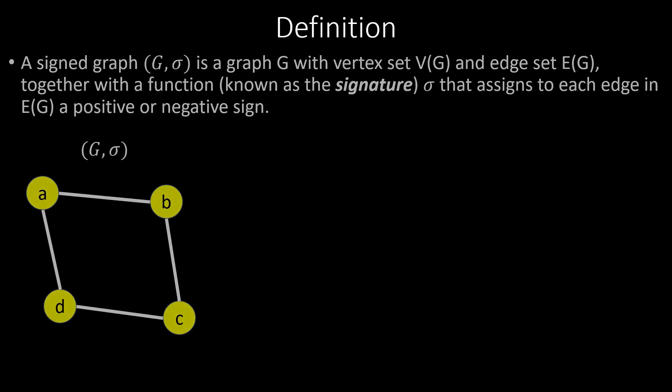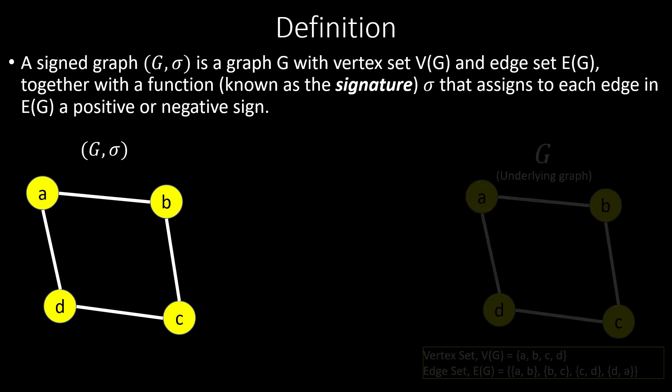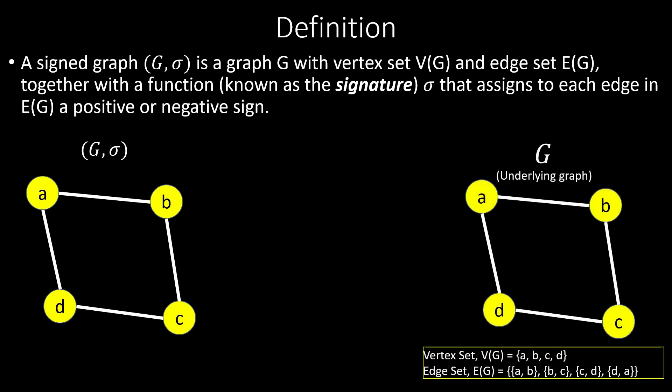A signed graph G-sigma is an unsigned graph G with vertex set V of G and edge set E of G, together with a function sigma, known as our graph's signature, which assigns to each edge a positive or negative sign. Basically, a signed graph is just a graph whose edges have positive or negative signs.